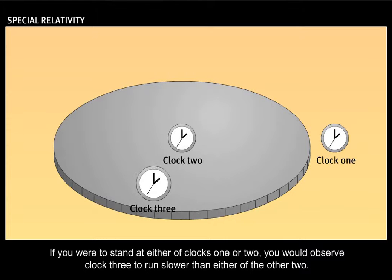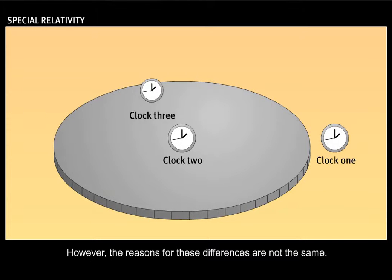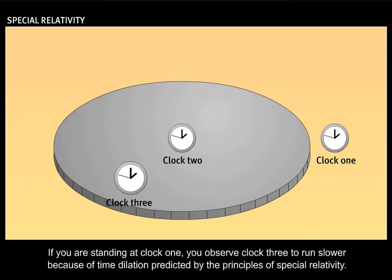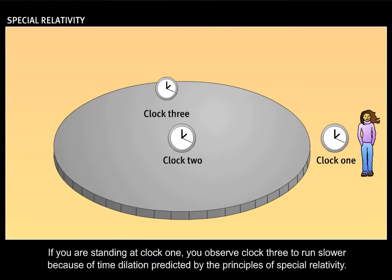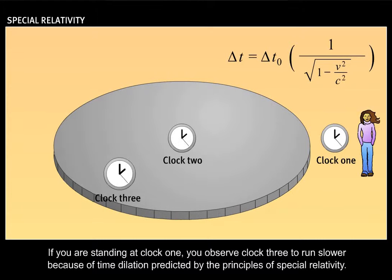If you were to stand at either of clocks one or two, you would observe clock three to run slower than either of the other two. However, the reasons for these differences are not the same. If you are standing at clock one, you observe clock three to run slower because of time dilation, predicted by the principles of special relativity.